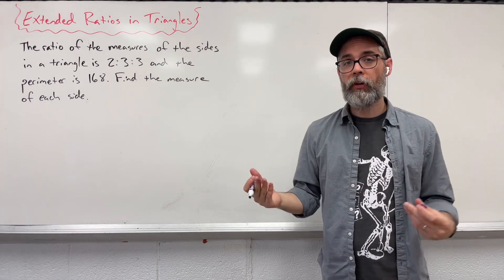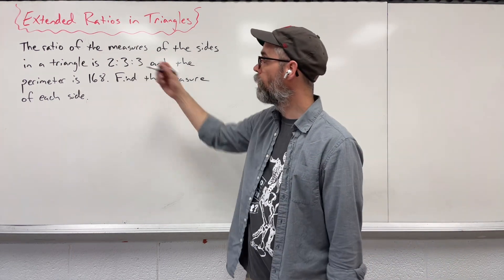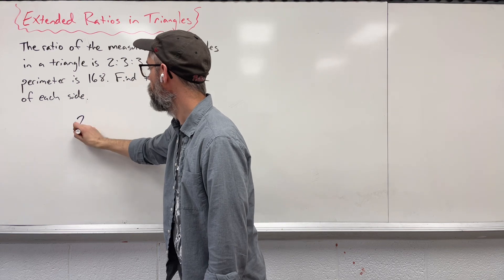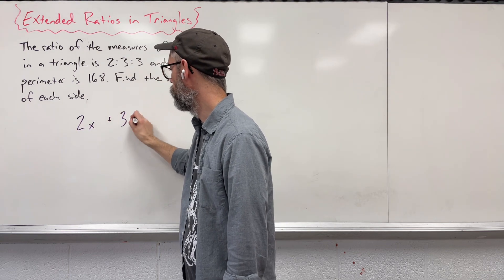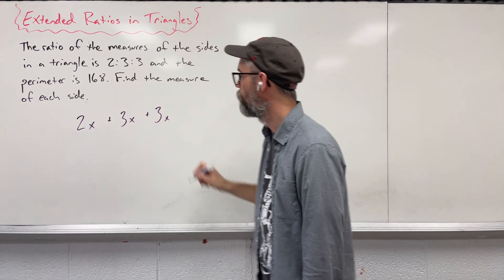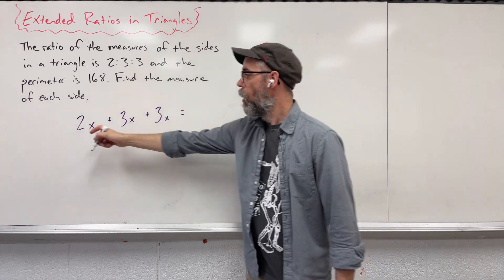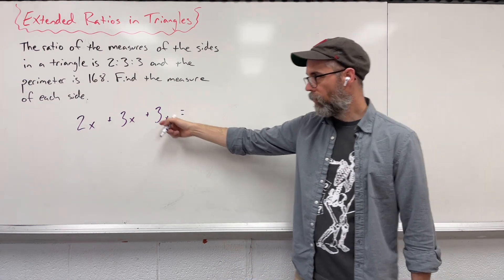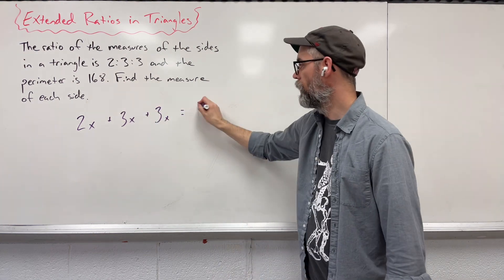So we create an equation. We're going to take our ratio, 2 to 3 to 3, and we're going to add a variable in there. And then the whole, all of our sides of that triangle add up to 168.